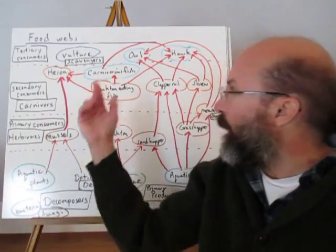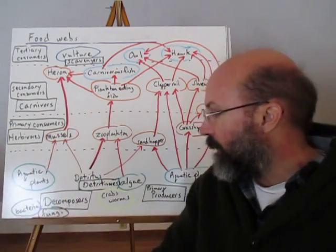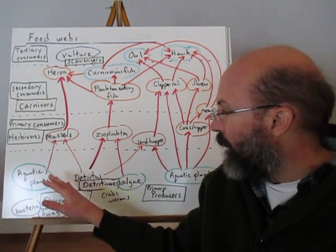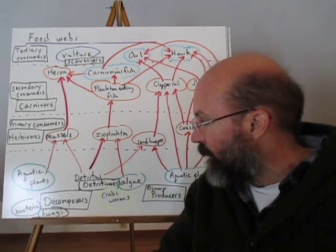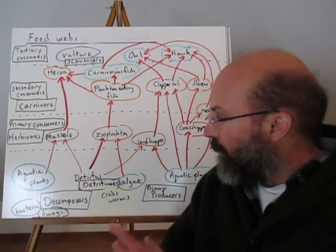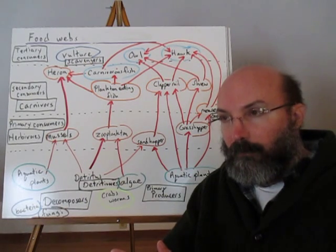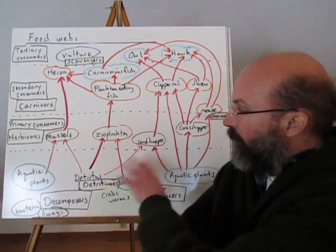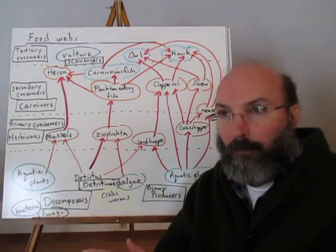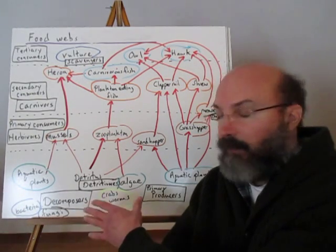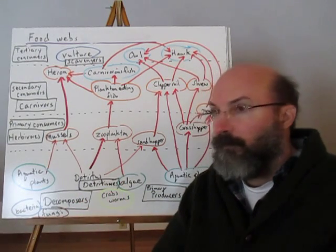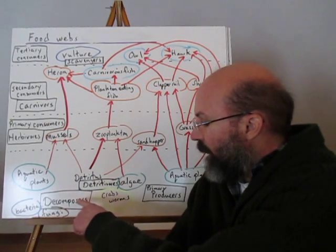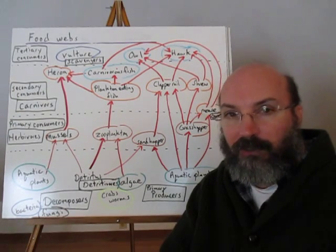Looking at a simple food web, the dotted line represents the break between different trophic levels. At the bottom we have primary producers — the photosynthetic organisms like aquatic plants and algae. Also down here are the decomposers — things like fungi and bacteria — which are so pervasive and important they need to be included in food webs, though often they're not. Detritivores are things that feed on detritus, the decaying broken-down parts of organisms. Decomposers break down the detritus, breaking down bodies and recycling the nutrients, because nutrients and chemicals will cycle.